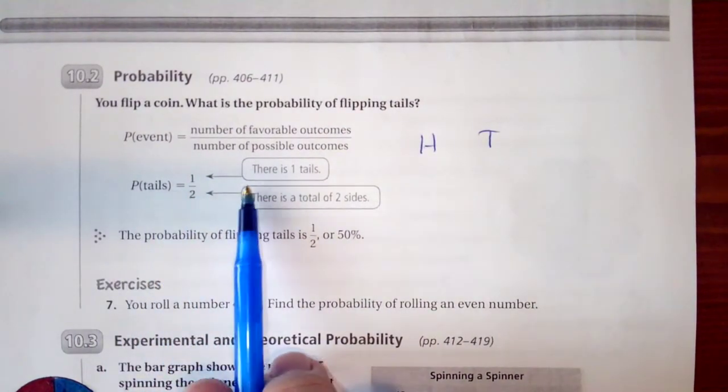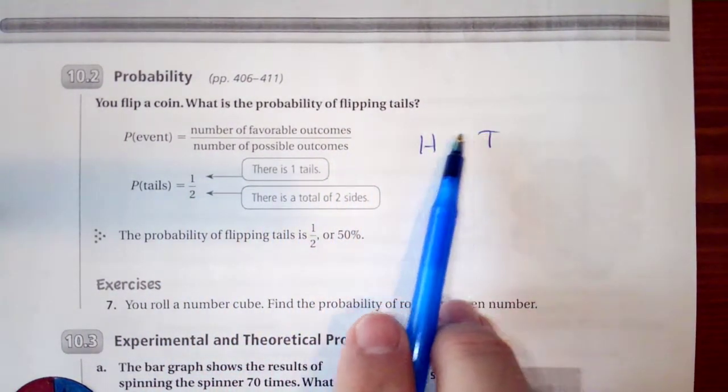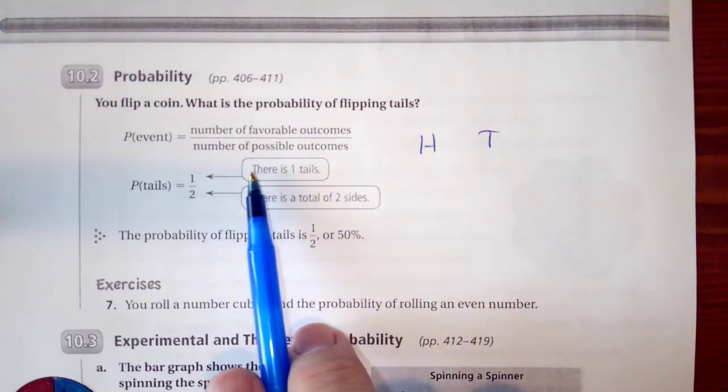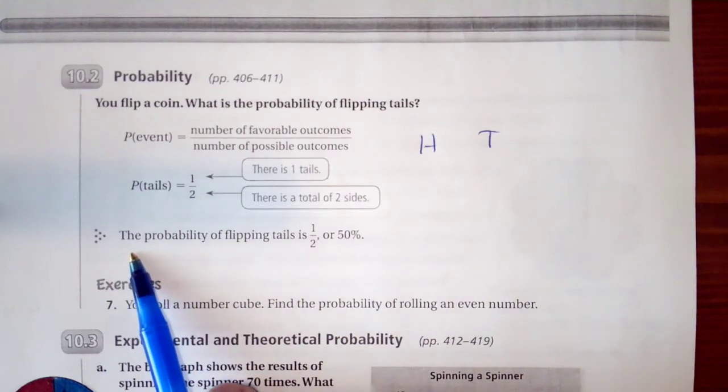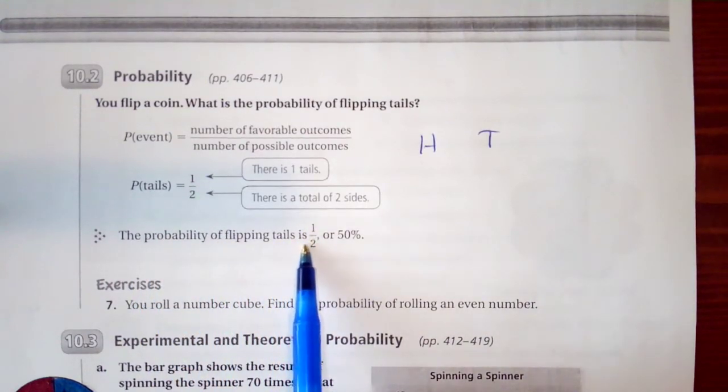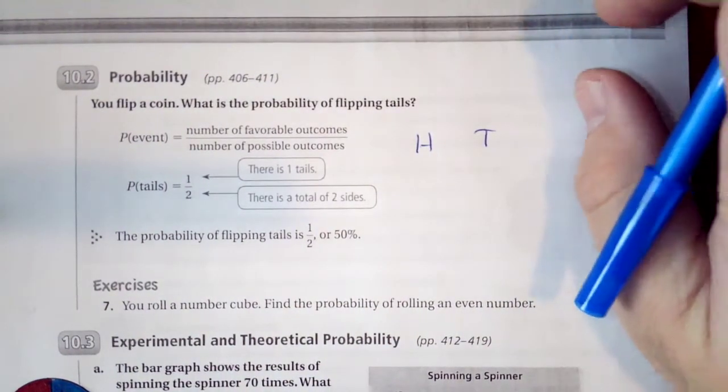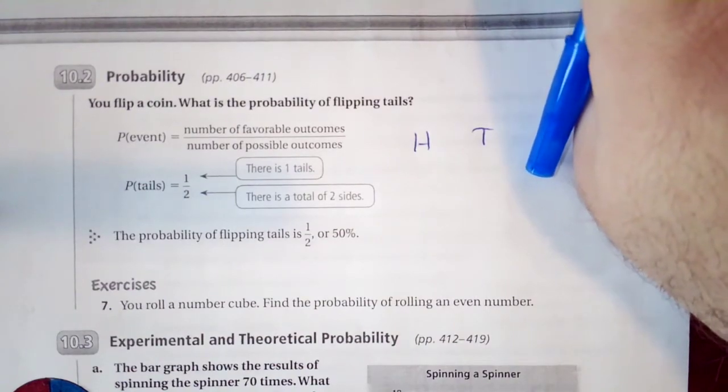Probability of tails. There is one tail and two possible outcomes, so we have one over two. The probability of flipping tails is one half or 50%. That was pretty simple. We're looking for one of our possible two outcomes.